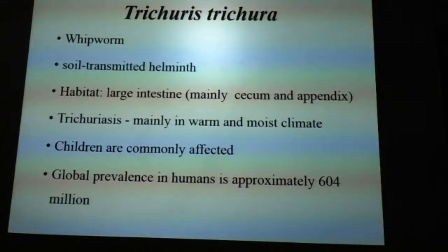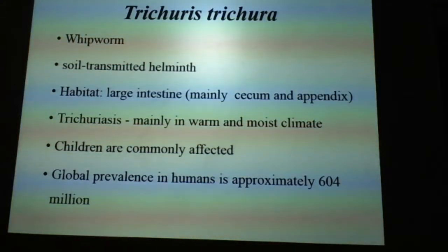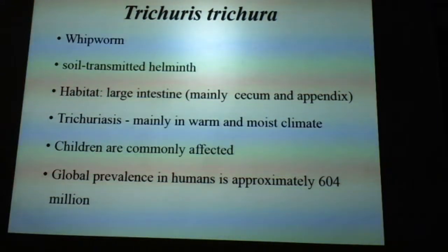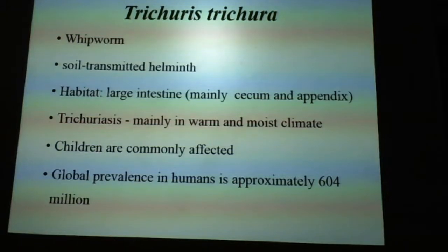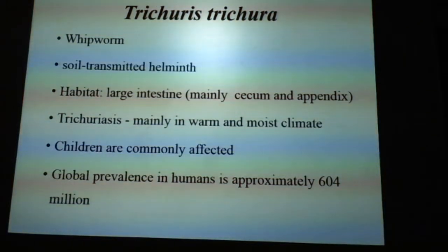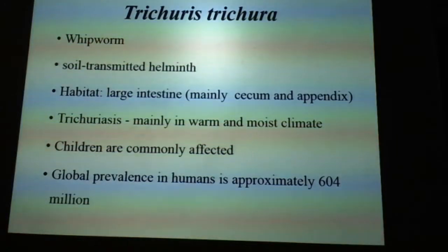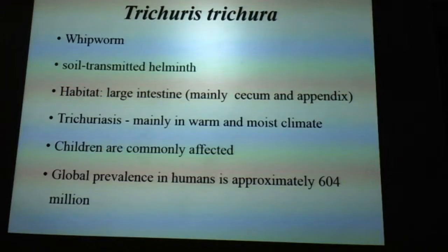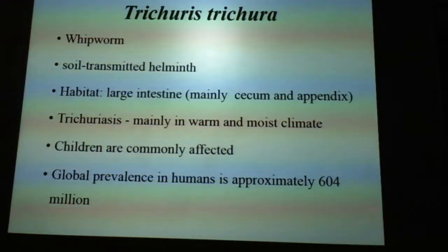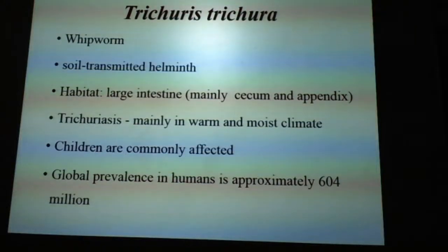Trichuris trichura is also called whipworm because of its shape — the body structure is in the shape of a whip. It is a soil-transmitted helminth. Its habitat, as mentioned in the classification, is mainly the large intestine — specifically in the cecum and appendix in most individuals. It causes a disease known as trichuriasis.